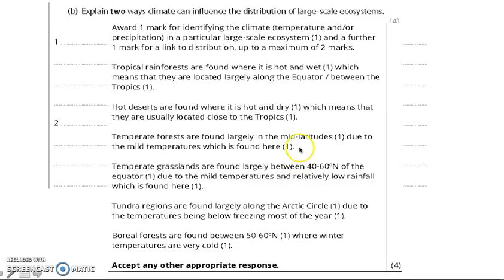And here's the mark scheme for it. So you could have had really any two of these for the four marks. You get one mark for identifying the climate, so either linking it to temperature or precipitation of a large ecosystem and a further mark for the link to the distribution. Notice again, connectives, tropical rainforests are found where it's hot and wet, which means that, which means that, due to, due to, due to, where those connectives are so important. So have a look at those. Have a look at some past papers and try some other ones. See if the patterns are the same for you there.